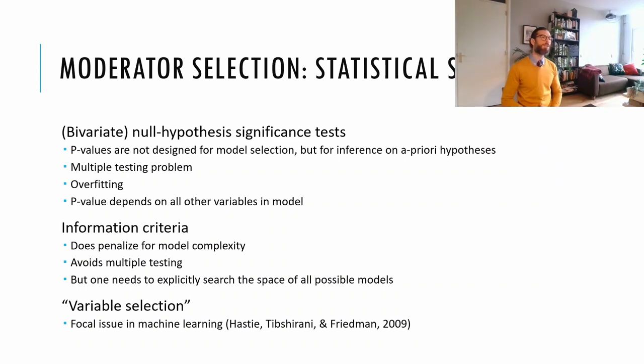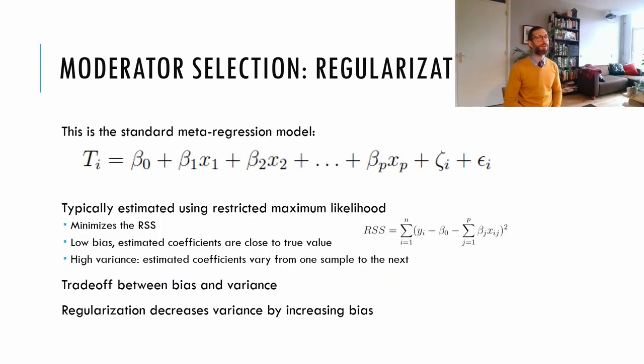And this is a technique from the machine learning literature. The specific variable selection technique that we use is called regularization. And to explain how this works, let's first have a look at the standard meta-regression model. It holds that the observed effect sizes are a function of some intercept, plus the effects of several regression coefficients, plus between studies heterogeneity and sampling error, which is assumed to be known. It is typically estimated using restricted maximum likelihood.